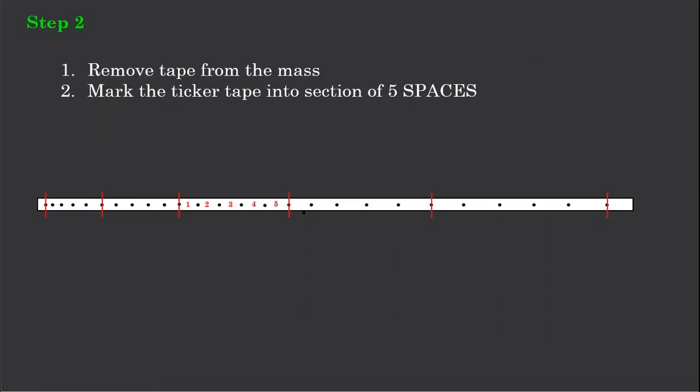We remove our ticker timer tape and we identify the very first clear dot, and we mark that with a pen.